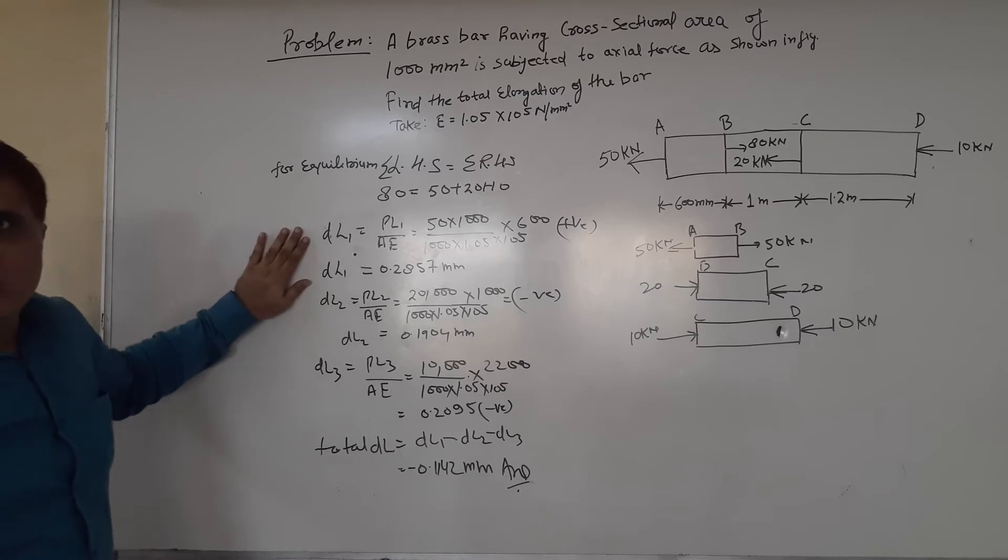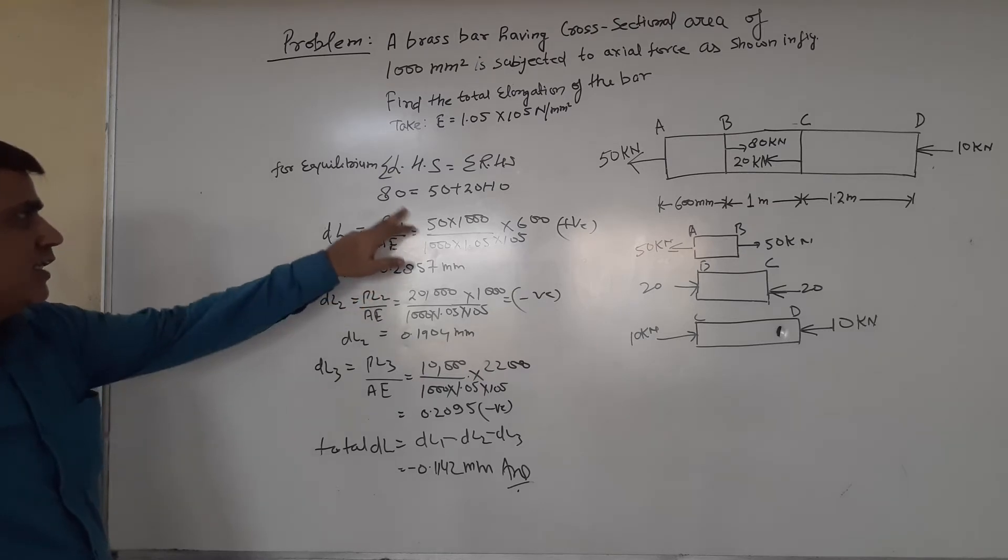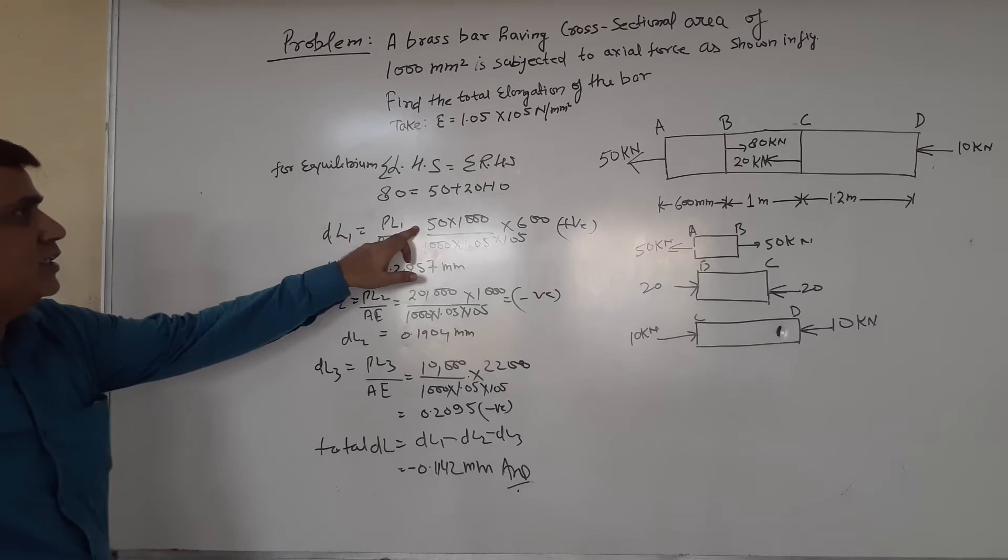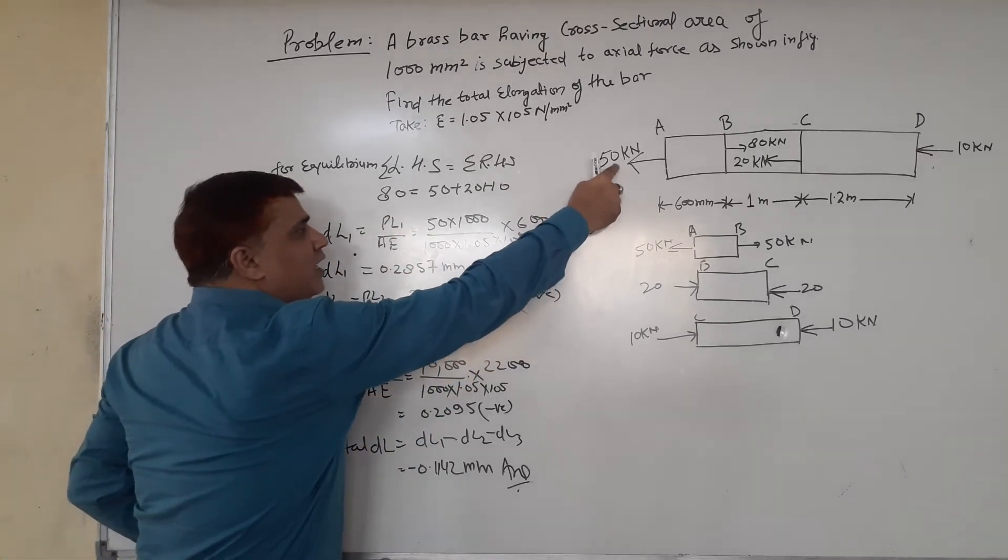Now we are finding ΔL₁. ΔL₁ is basically PL₁ upon AE for section AB. P is the load given in the question: 50 kN. We convert 50 kN to 50,000 N.